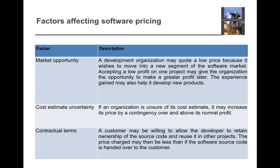The third factor is contractual terms. A customer may be willing to allow the developer to retain ownership of the source code and reuse it in other projects. In that case, the price charged may be less. If the complete source code is handed over to the customer, the price is different, but if the developer reuses that code across different projects for different customers, the pricing will obviously be less.